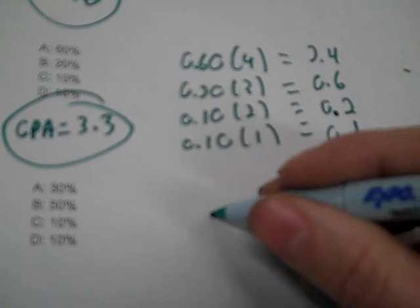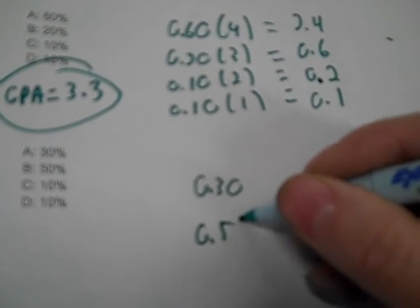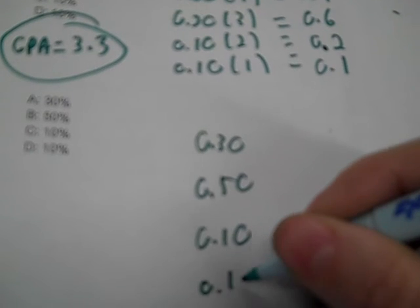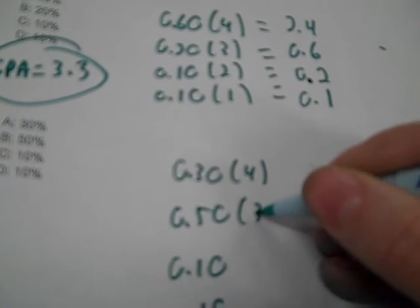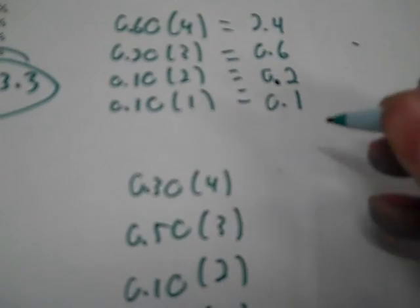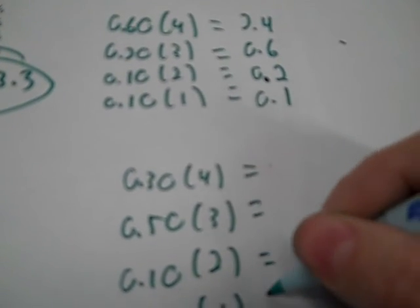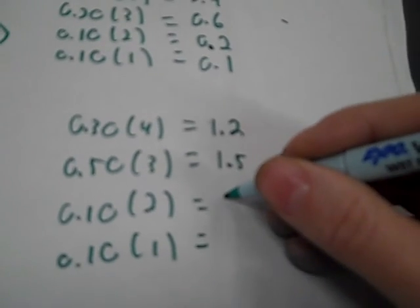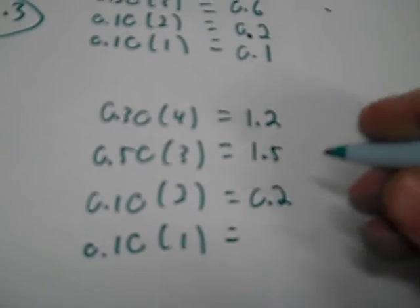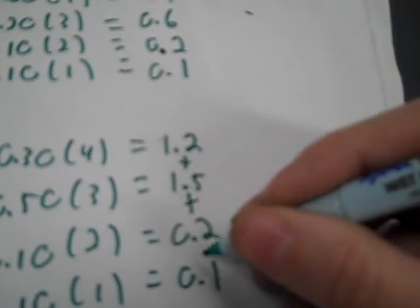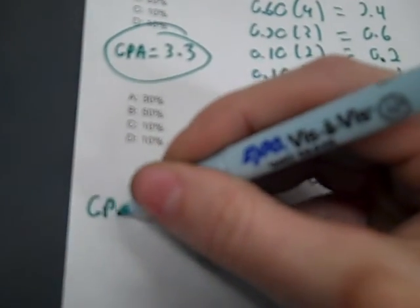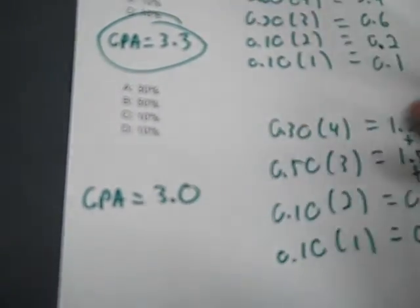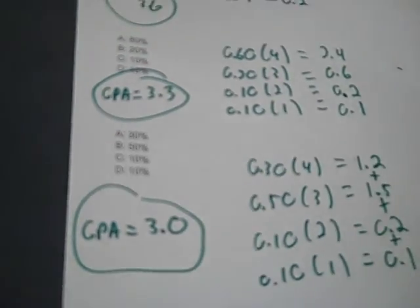Last one. 0.30, 0.50, 0.10, 0.10. So, times 4, 3, 2, and 1. So, I find those products. And that's a 1.2. That's a 1.5. That's a 0.2. You multiply them. That's a 0.1. Use a calculator if you can't do it mentally. So, you add those up. And that's a 3, 3 whole. So, the GPA here is 3.0. If it's a whole number, you usually express it with a 0.0.